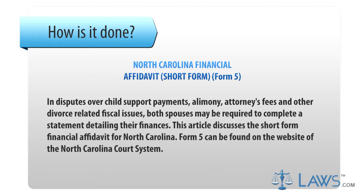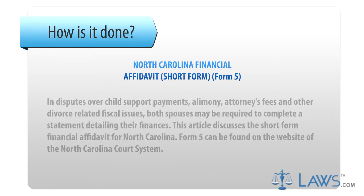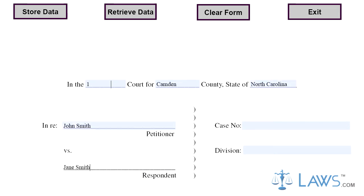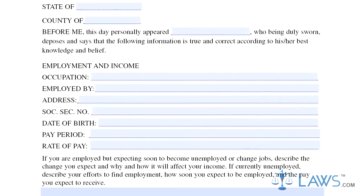Form 5 can be found on the website of the North Carolina Court System. Step 1: Enter the number of the court hearing your case, the county and state, at the top of the form. Enter the name of the petitioner and respondent, as well as the case number you have been assigned.